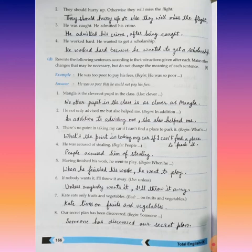Number eight: Our secret plan has been discovered. Begin with 'someone': Someone has discovered our secret plan. This finishes our Chapter 10 for the grammar part. Thank you, children.